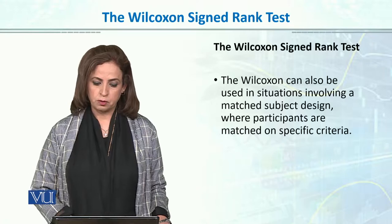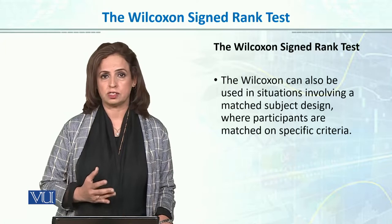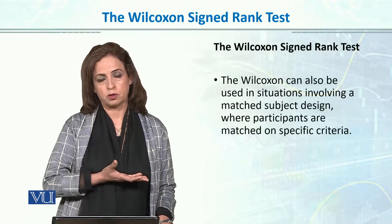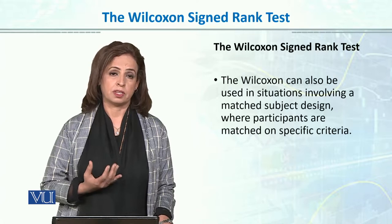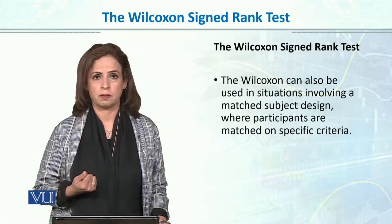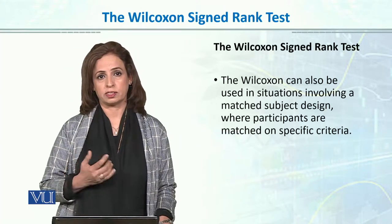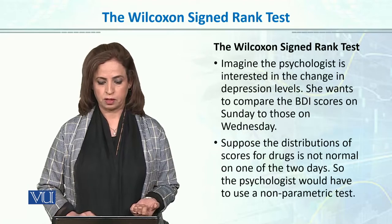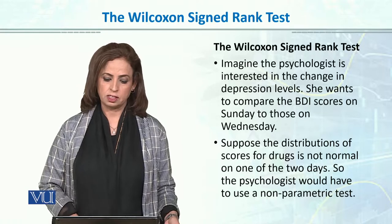Wilcoxon can also be used in situations involving matching subjects. If we have a matched design and experimental conditions where the underlying distribution is not normal, population samples are very small, and parametric assumptions are not fulfilled, then Wilcoxon signed rank test is the best choice. For example, if you want to match on time 1 and time 2 and see the difference in the design, Wilcoxon signed rank test would be the best choice.